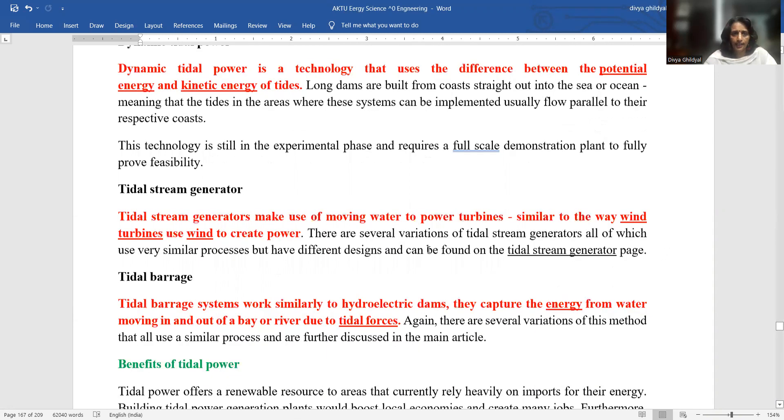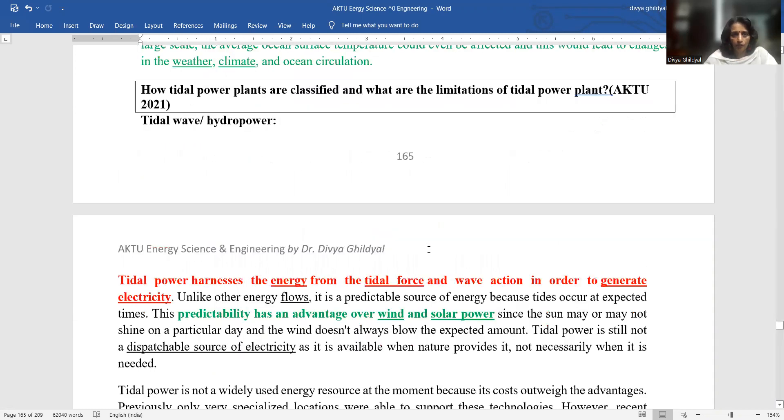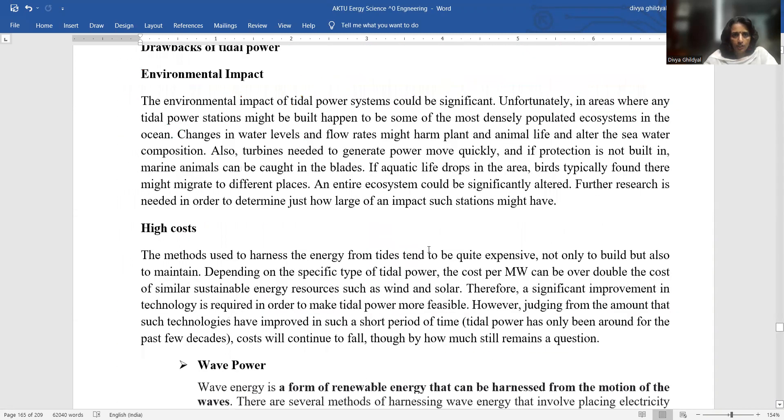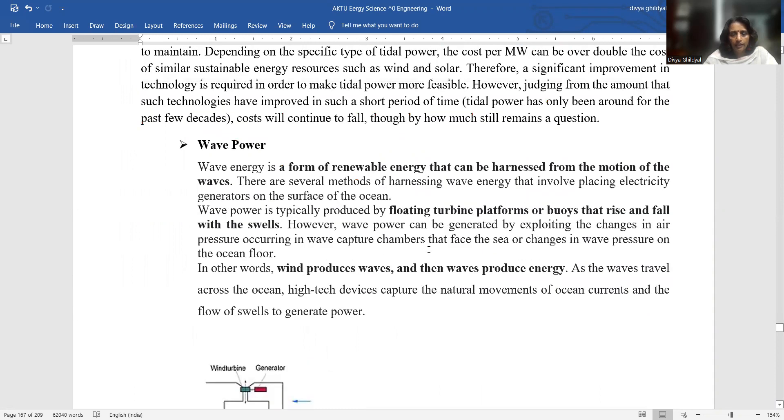In this heading, I have briefed you all the headings of your syllabus and I am just going to continue with my wave power. What is a wave? Water on an ocean surface is in the form of a wave consisting of wave energy. It is a form of renewable energy that can be harnessed from the motion of the wave. Many methods are there for harnessing this wave energy, which involves placing electricity generators on the surface of the ocean.